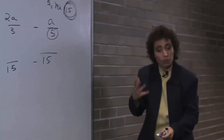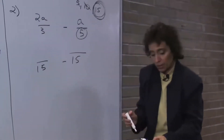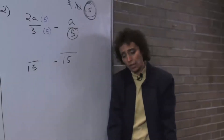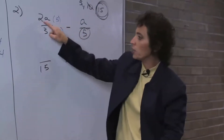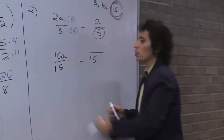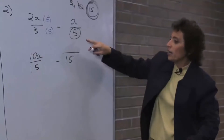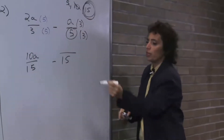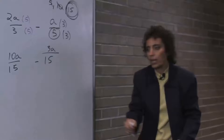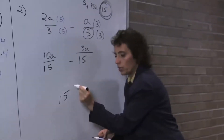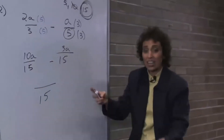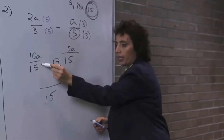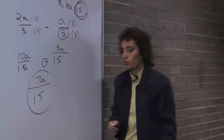Now we want to build the fraction so they both have 15 as a common denominator. We multiply this by 5, then multiply this by 5. Remember, this is just 5 times 2, which is 10. So that's 10a. And here we need this to be 15, so we multiply by 3 — that's 3a. Now we have the same denominator. The answer has 15. I have 10 a's, I owe you 3 a's — they are like terms. I have 10 a's, I owe you 3 a's, so I have 7 a's. So it's 7a over 15.